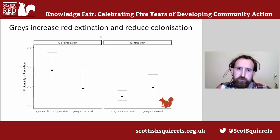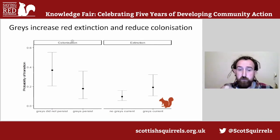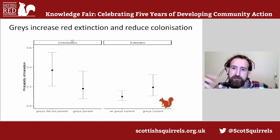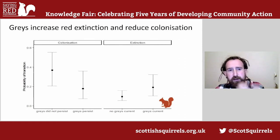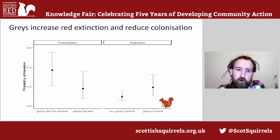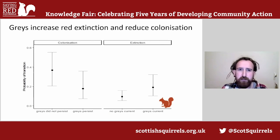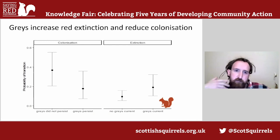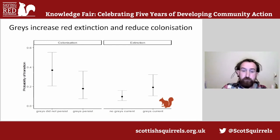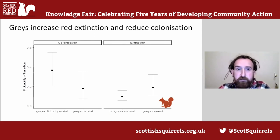What impacts do grey squirrels have on red squirrels? Once we have the truth of whether grey or red squirrels are actually present, we can ask whether they impact each other. Grey squirrels impact the extinction of red squirrels — where grey squirrels are present, reds are much more likely to go extinct — and they also impact colonization. Sites with grey squirrels are much less likely to be colonized by red squirrels. Interestingly, the colonization effect is strongest not in the same year, but if greys persist on a site for more than two years. So to help reds colonize new sites, we need to focus efforts on the periphery of where reds currently are and remove greys from those sites.